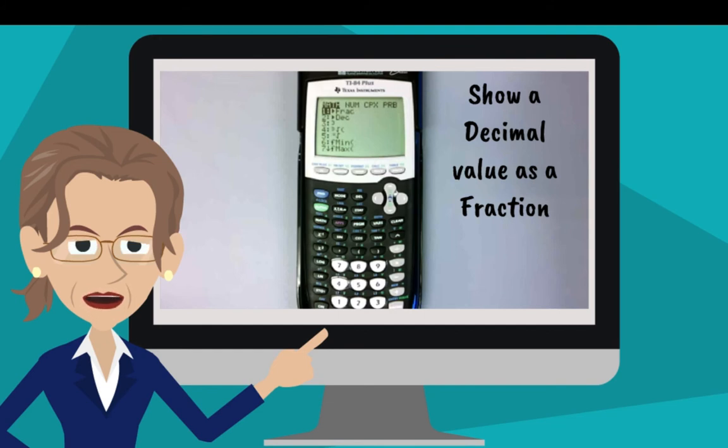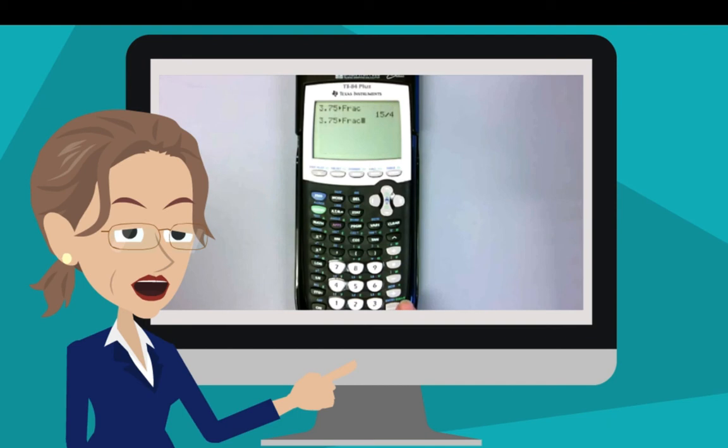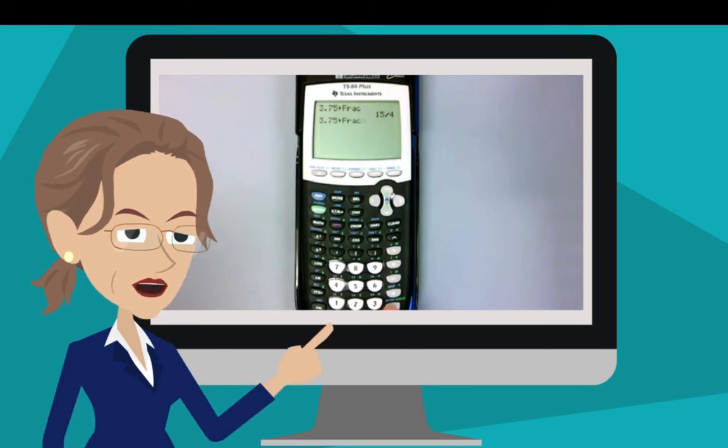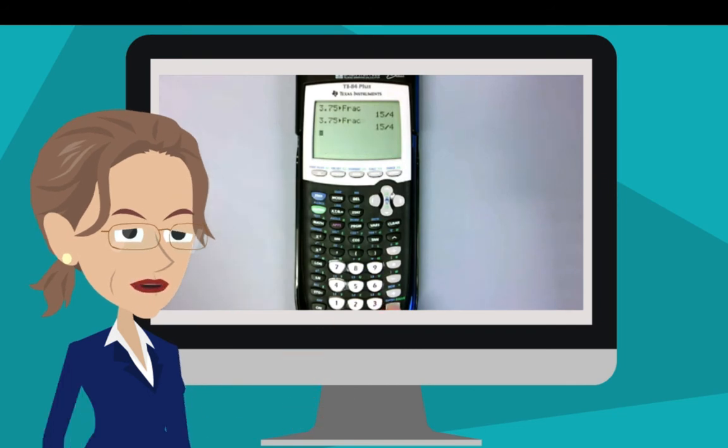Either way, you will be asked, answer show as fraction. In other words, do you want that last answer on the calculator to be turned into fraction? You do, so you will press enter, and you will hear that decimal expressed as a fraction. Here is how it works. I am going to press 1 to select show as fraction. And the calculator asks me if I really want to show my decimal as a fraction, and I press enter to show that I do. 15 divided by 4.